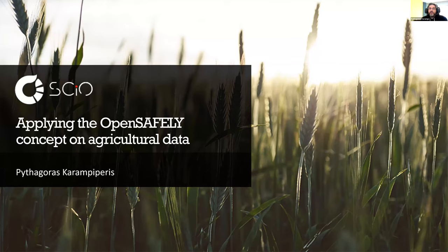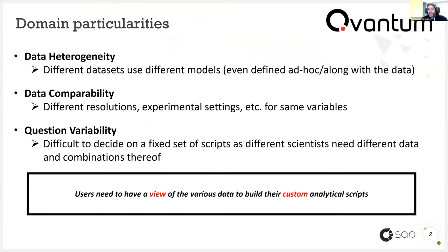Before the demo, I'd like to give some observations on the aspects and issues we need to consider for applying the OpenSafely concept on agricultural domain data. We should certainly start from examining some distinct characteristics of this data. First, data are in general highly heterogeneous, using different structures — in some cases the structure is actually defined within the data, for example with a separate metadata sheet in tabular data files. Moreover, while different datasets may refer to the same variables, they are not immediately comparable and thus suitable for being combined, as they are produced with different experimental settings, are of different resolution and granularity, and so on. Lastly, it is important that the same datasets can be used for hugely different analyses depending on the discipline and aim of the analysis.